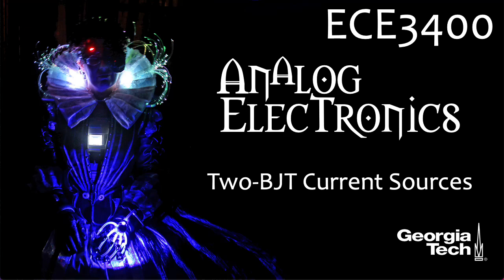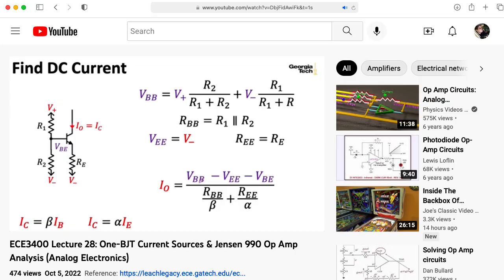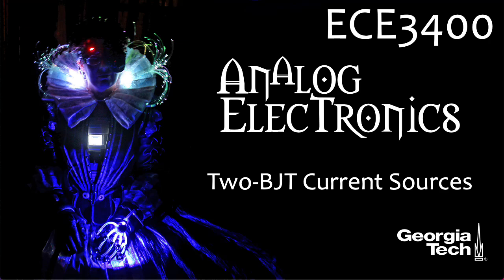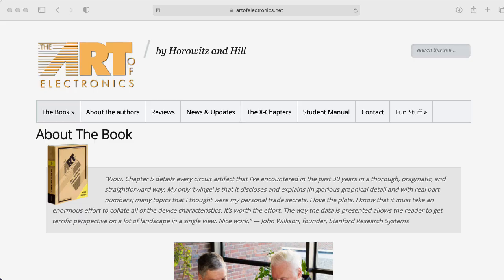Hi there. My name is Aaron Lanterman. I'm a professor of electrical and computer engineering at Georgia Tech, and in the last lecture of EC3400 Analog Electronics, we looked at current sources made of a single bipolar junction transistor and either resistors or a resistor and a couple of diodes or a resistor and a Zener diode. In this lecture, we're going to look at a more sophisticated circuit using two BJTs that gives improved output impedance, and you can find this circuit in The Art of Electronics by Horowitz and Hill.